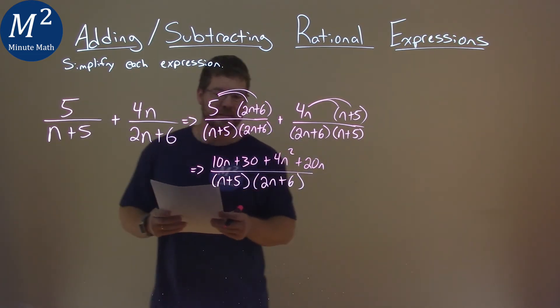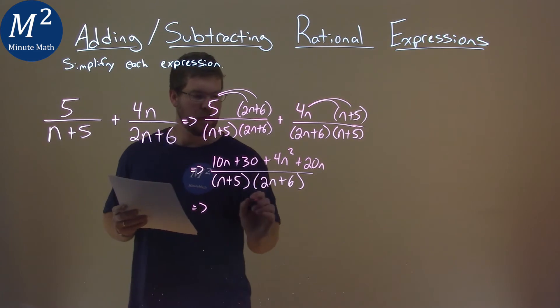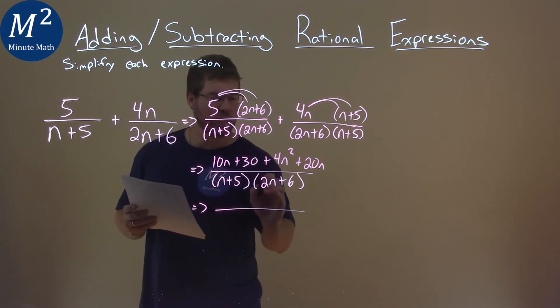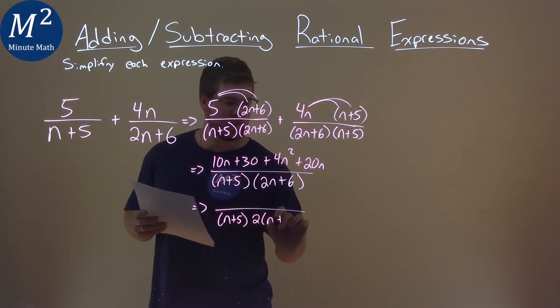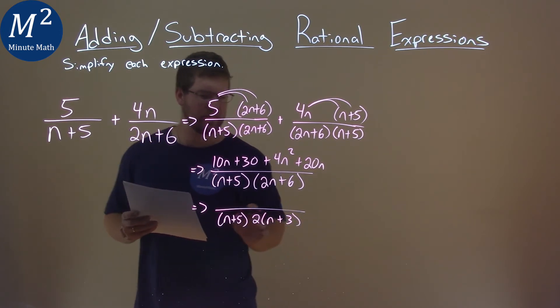From there, I'm going to simplify where we can. My denominator, notice that I can pull out a 2 right here. There's a 2 in both parts. So we have n plus 5 here, and I can pull out a 2, and we have n plus 3. It's kind of all multiplication there, so be careful.